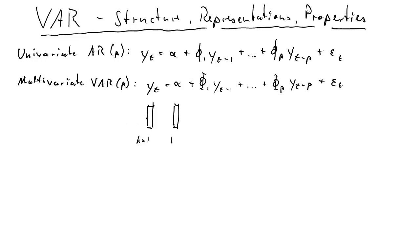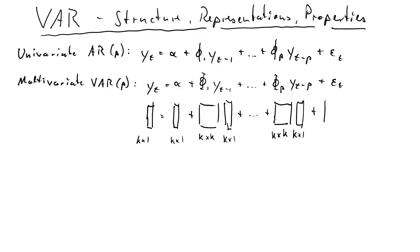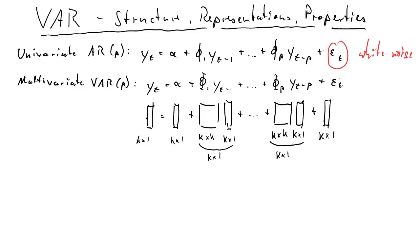So yt is really a k-by-1 vector, and the constant is also k-by-1. The coefficient matrix is k-by-k, and the yt lags are k-by-1, and the error term is k-by-1. Together these terms are k-by-1 as well, so everything is k-by-1 in the end and we just have additions of k-by-1 vectors.